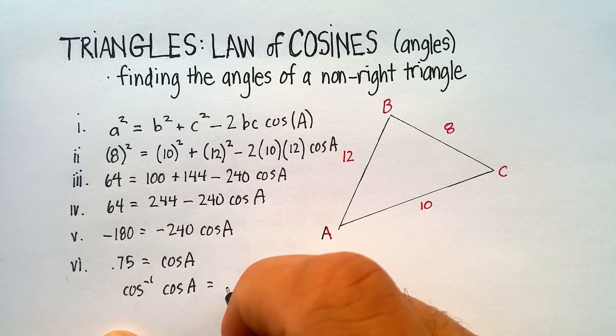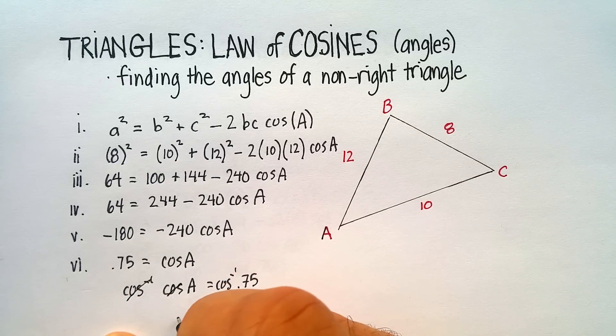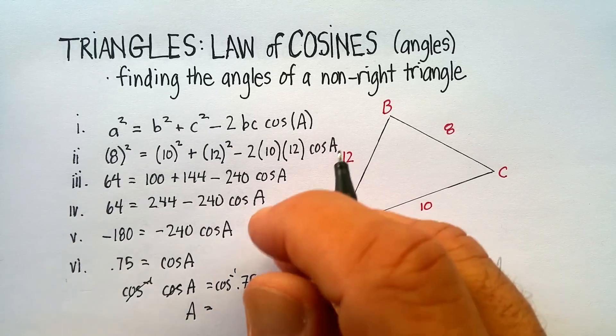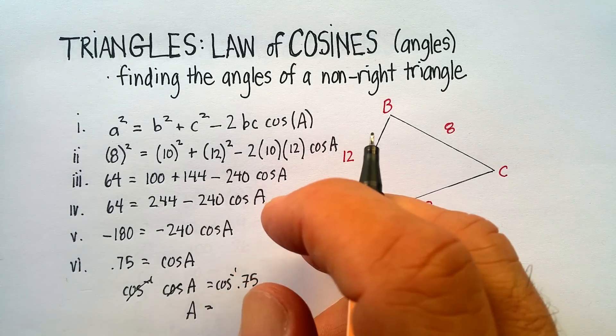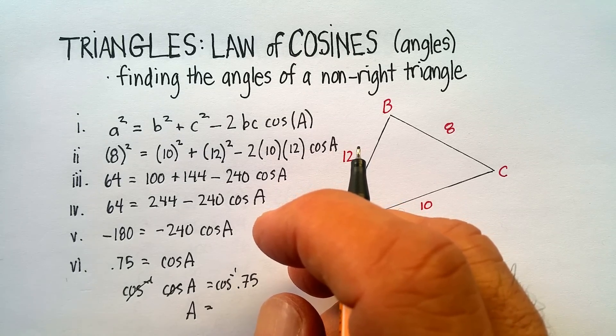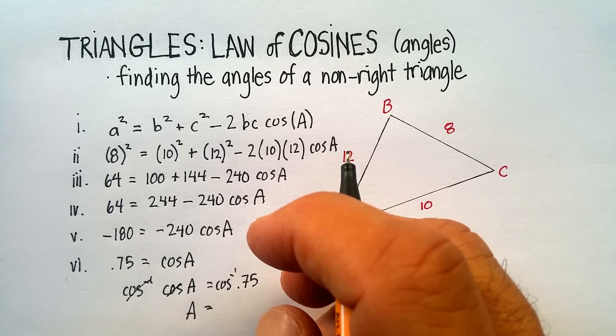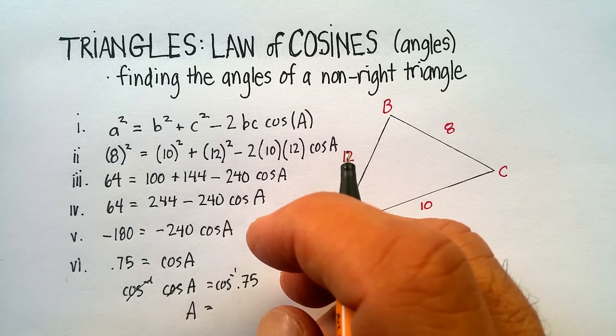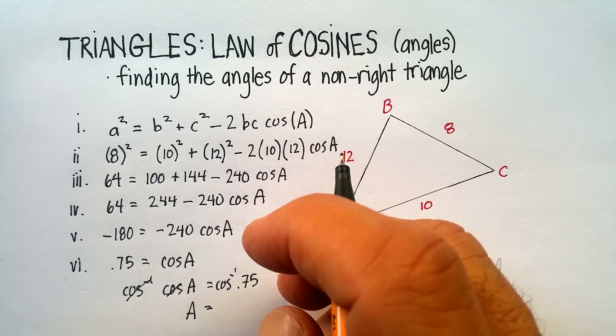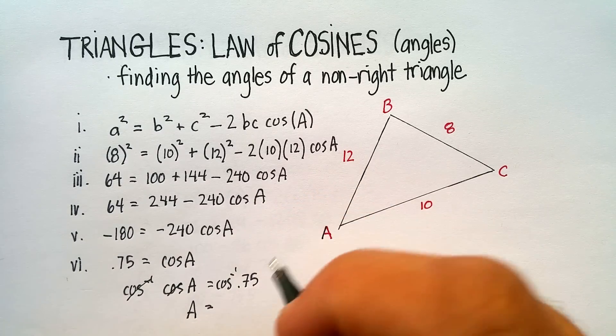We have to take the inverse function, so let's apply the inverse cosine to both sides. The angle A is equal to the inverse cosine of 0.75. And that is going to be 41.4 degrees.